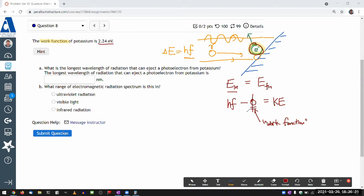So when the question tells you that the value of the work function is this, it's telling you value of this parameter Φ. So, okay, question A, it asks, what is the longest wavelength of radiation that can eject a photoelectron from potassium? Longest wavelength.